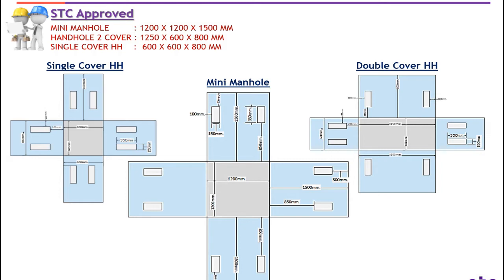In single cover you can see two knockout windows on each wall, so a total of eight knockout windows. In double cover also two knockout windows on each wall — total of eight knockout windows. In mini manhole also, there are two knockout windows on each wall, so four sides means eight knockout windows. The knockout window dimension is 350 mm height and 150 mm width.